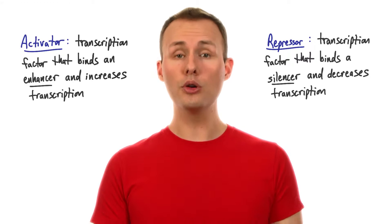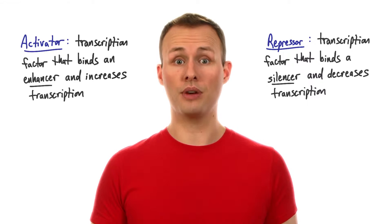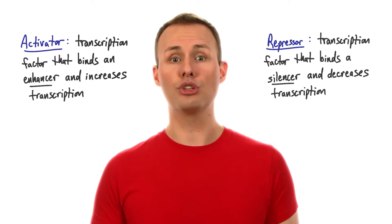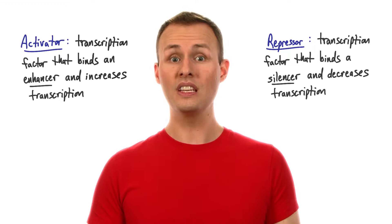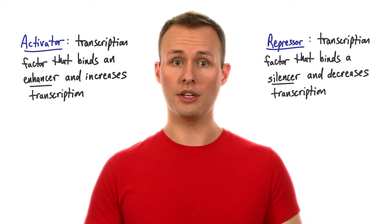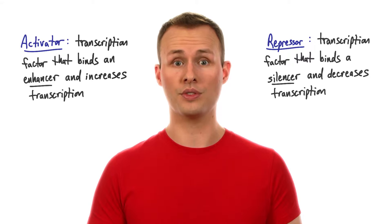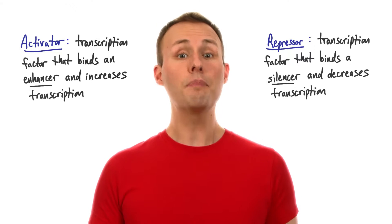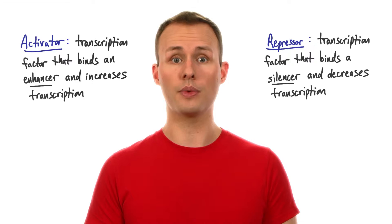Now in reality, most genes are actually a mix of both activators and repressors, giving us a very fine-tuned gene expression pattern. This is called combinatorial regulation because there's a combination of both activators and repressors. And a certain trait can appear or disappear depending on the threshold of transcription that we reach.